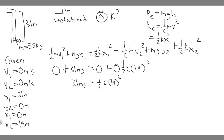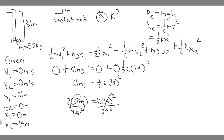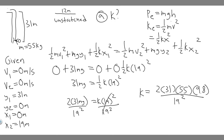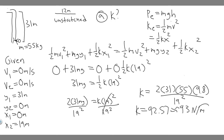Now solve for K. Multiply both sides by 2: 2 times 31 MG equals K times 19 squared. Divide both sides by 19 squared: K equals 2 times 31 times M times G over 19 squared. Plugging in M equals 55 kg and G equals 9.8: K equals 2 times 31 times 55 times 9.8 over 19 squared, which gives 92.57, rounding to 93 Newtons per meter. That's the answer to Part A.